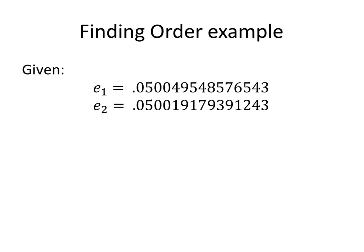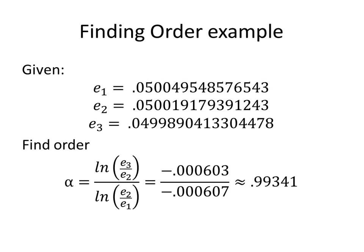And so if we use this formula on an example, we're given three different errors that we found using bisection method. And if you go ahead and take those and plug them into that equation that we had, then alpha is equal to about one, which means that this equation converges linearly, which you would expect. The error is only going down by half every time.